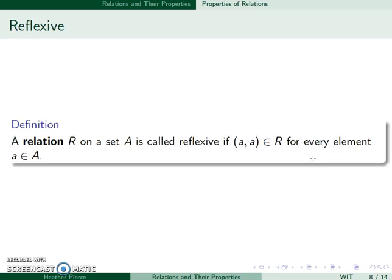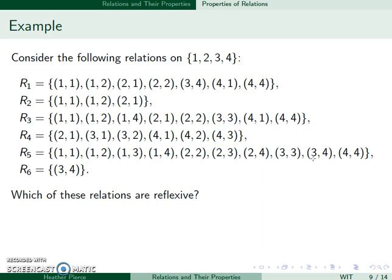So we're going to look at four different properties that relations can have. The first one being reflexive. So we call it reflexive if A, A is in R for the element A and A. So basically these double points, points that repeat themselves. So we'll consider these relations. Since I have four points, I'm looking for the points 1,1, 2,2, 3,3, and 4,4. And I need all four of these.